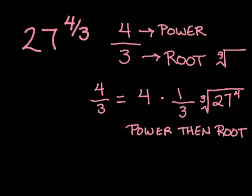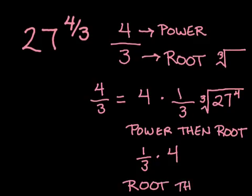So instead of doing it this way, it might be a little easier to think of this in the reverse order, and think of 4 thirds as 1 third times 4, meaning in the order we want to do it here, we're first going to take that cube root, then raise that result to the fourth power.